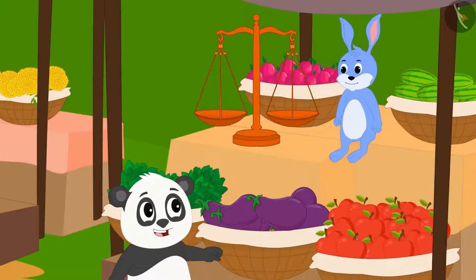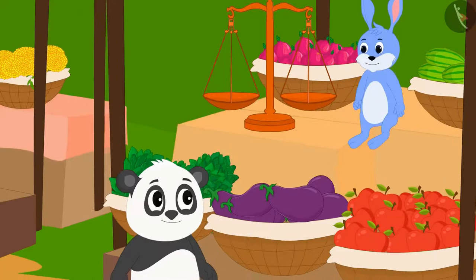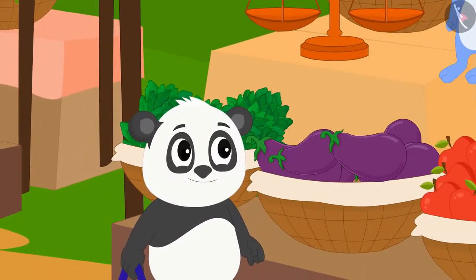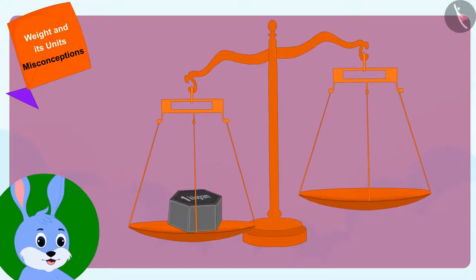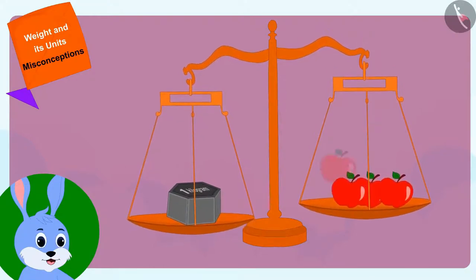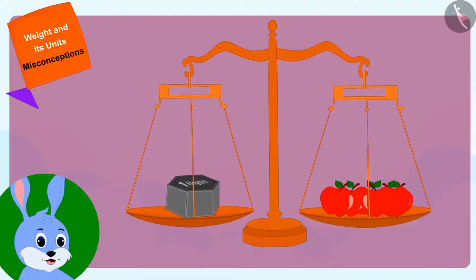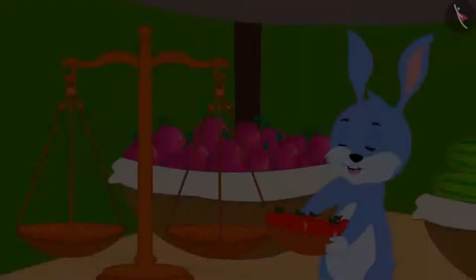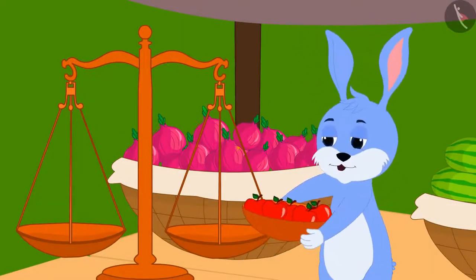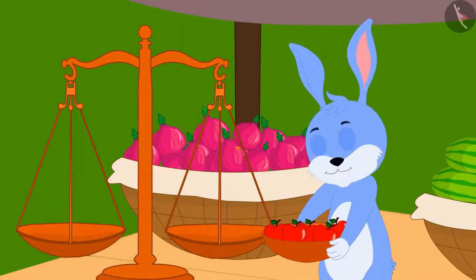Bunny put a weight of one kilogram in one plate of his weighing scale and weighed apples in the other plate until the two plates came to the same level. Then Bunny said to Golu, "Here you are, one kilogram of apples for 50 rupees."